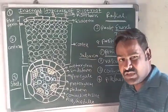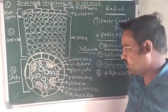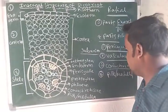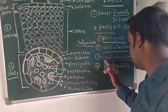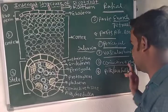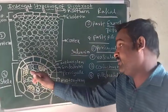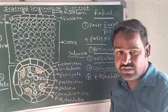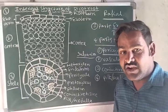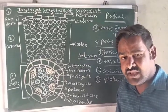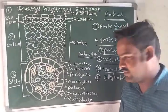The third part of the stele is conjunctive tissue. The tissue between the xylem and phloem is called conjunctive tissue. It mainly contains parenchyma cells, helping in the storage of food materials.